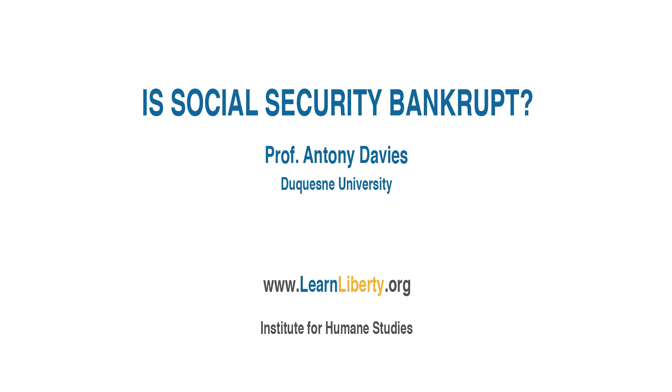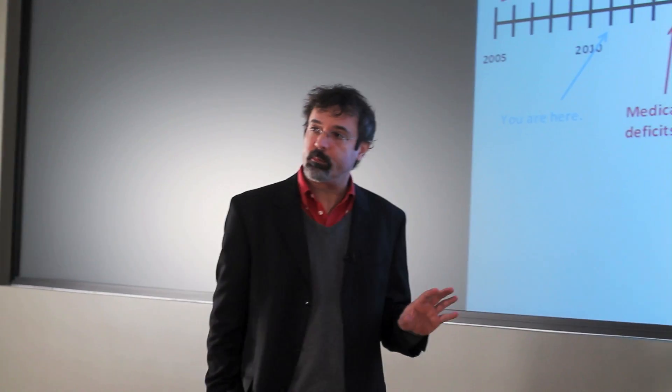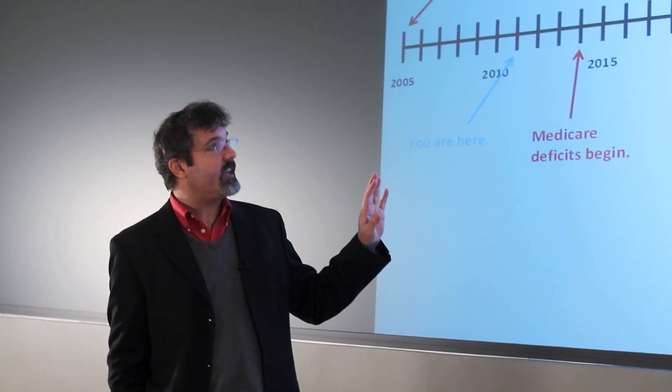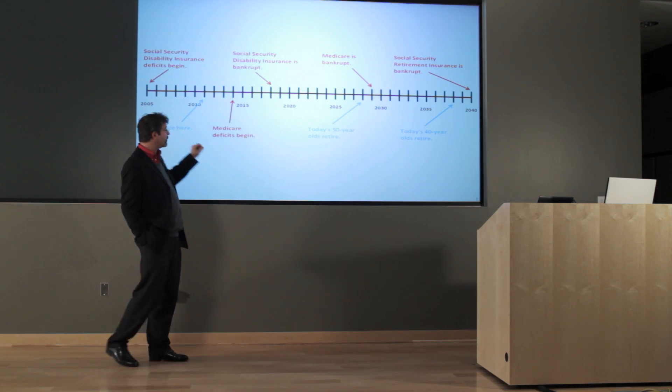The Board of Trustees of the Social Security Administration and Medicare claim that Medicare and Social Security will be bankrupt within the next 20 to 30 years. So to put things in perspective, these dates come from the Board of Trustees of Social Security and Medicare, their 2009 reports.